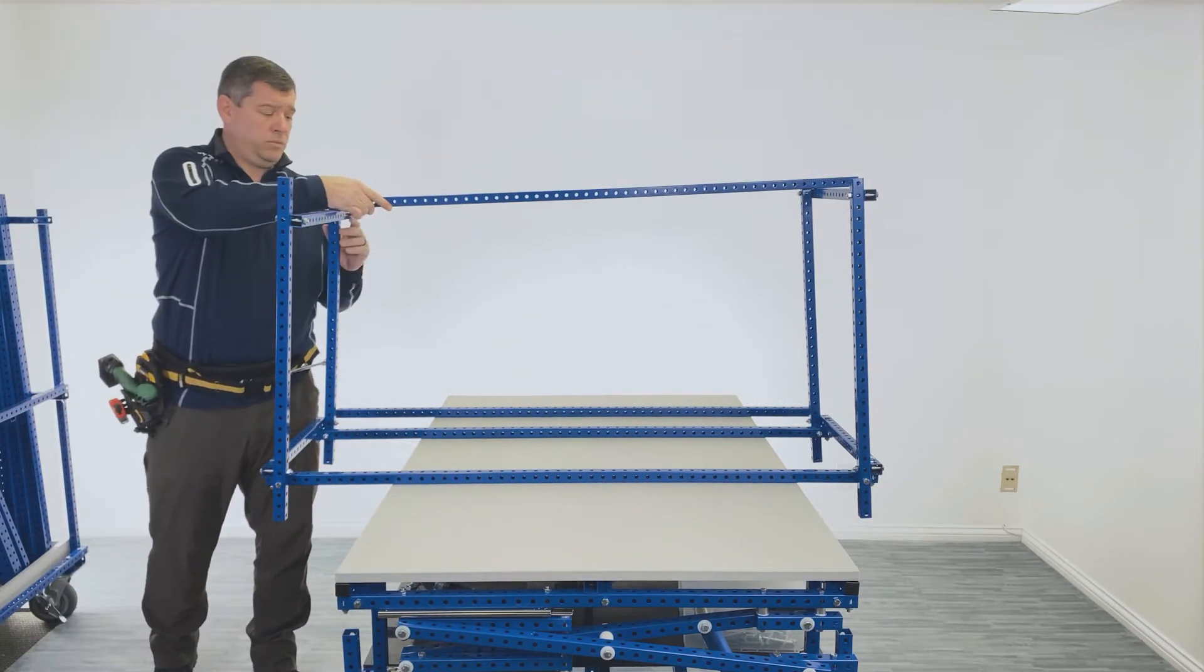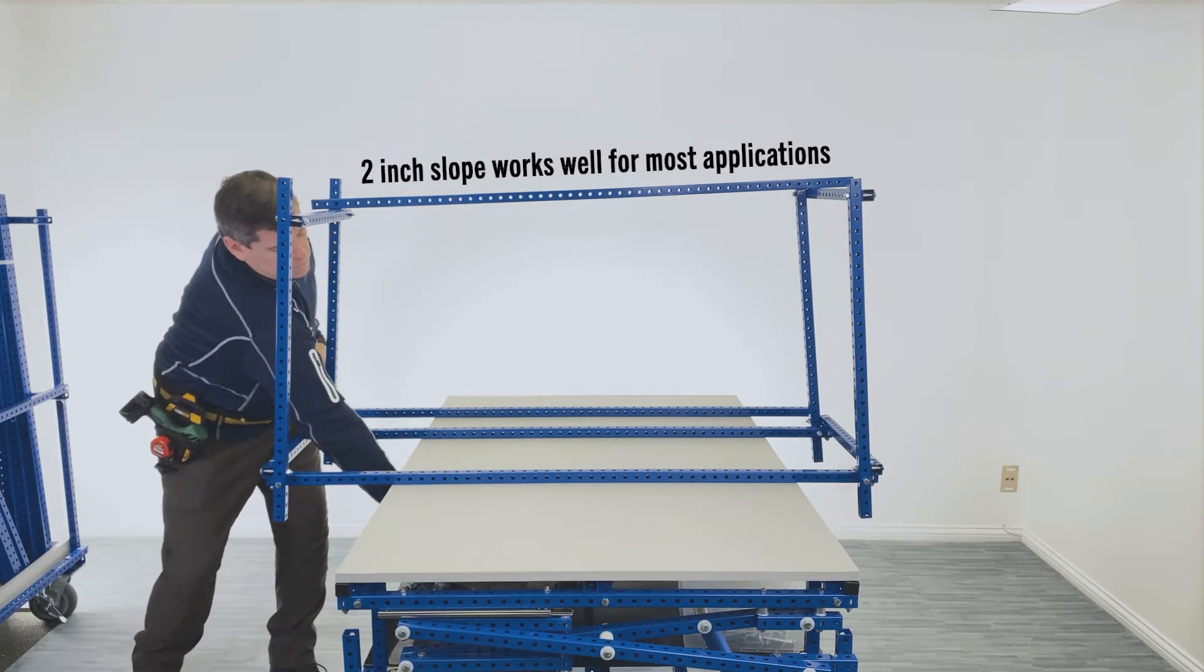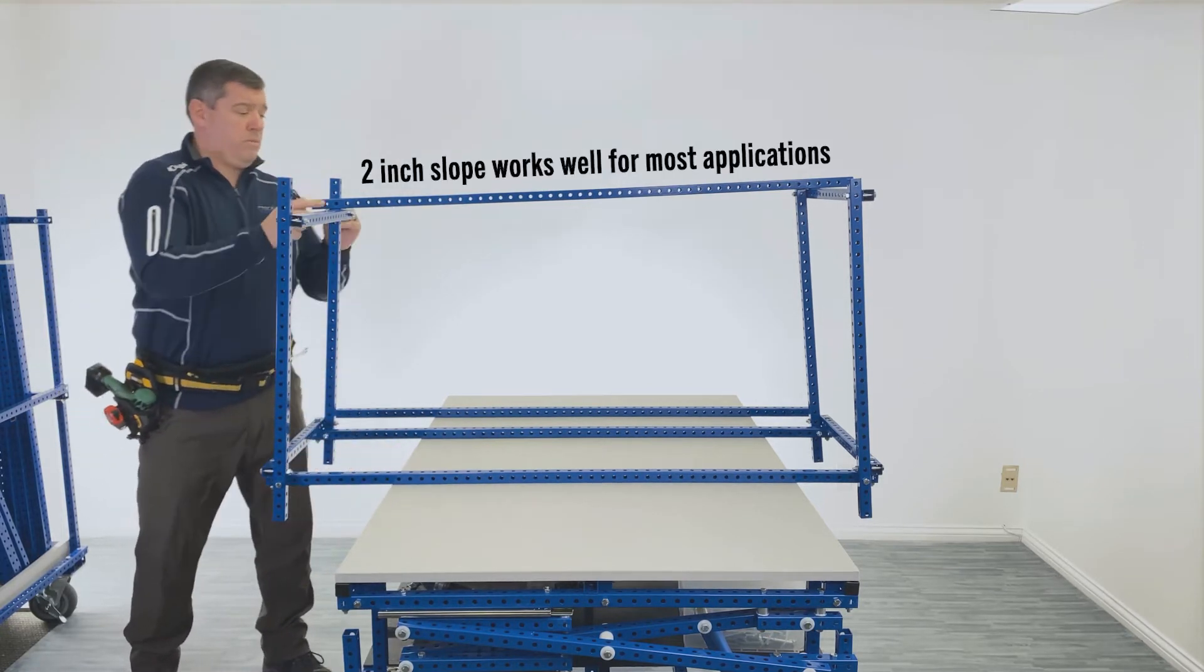Place lane guide length tubes on top of cross tubes. Note the two inch angle from the load end to the pick end.